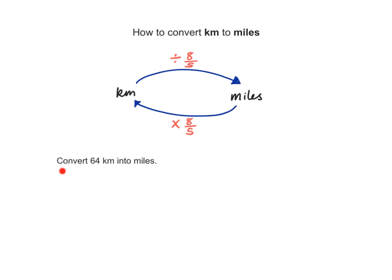Here we have a question that says to convert 64 kilometers into miles. So we're going from kilometers to miles. All I need to do is to divide the 64 by 8 over 5. So 64 divided by 8 fifths.